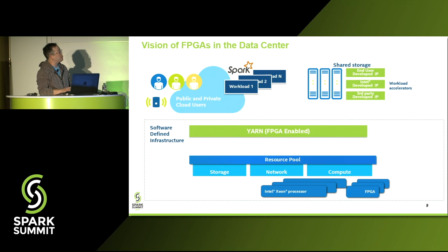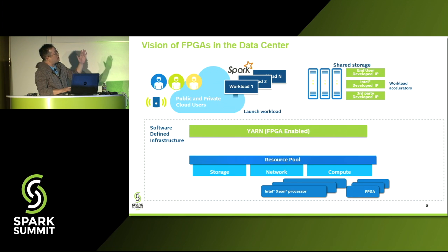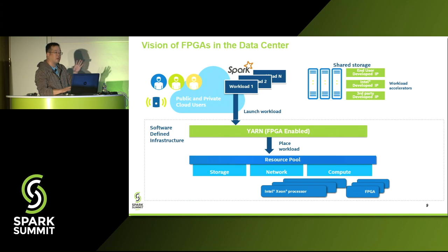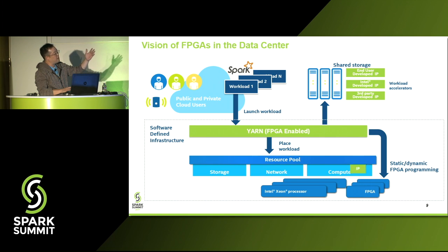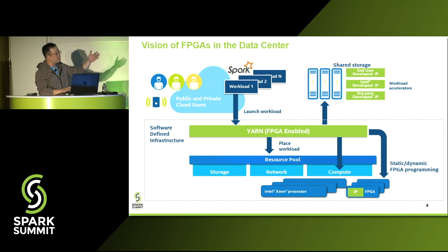To address this problem, we have enabled FPGA on the resource management layer, which is YARN. Spark will launch the workload to YARN and send the FPGA constraints with it. YARN will look at the constraints, schedule an appropriate node based on the requirements, and place the workload on a certain node manager host. Before launching the container, YARN will first fetch the IP from shared storage, flash it to the FPGA device on that host, and then launch the container.